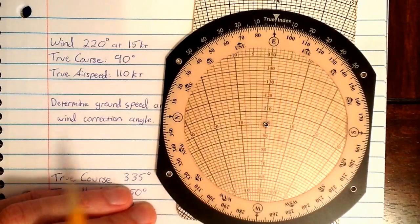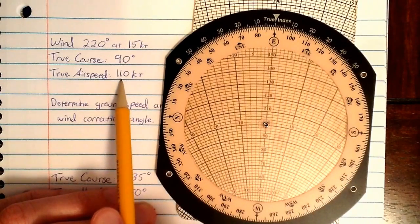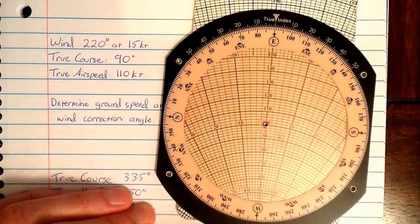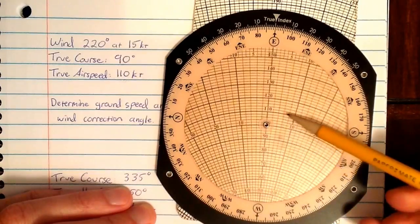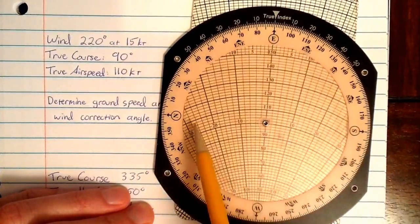Now that our course is set, what else do we know? We know our airspeed. We know our airspeed is 110 knots. So we're going to align the wind dot with the airspeed arc that represents 110 knots.